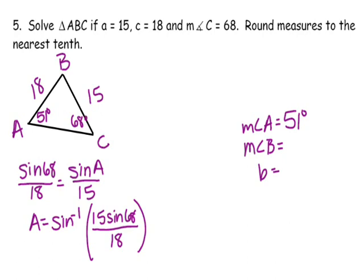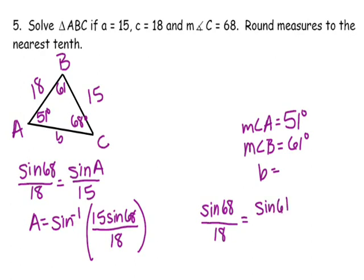Now that angle A is 51 degrees, add 68 and 51, then subtract from 180 to get angle B = 61 degrees. All that remains is finding side b. Set up a new proportion using the original given values — to avoid compounding errors, go back to the given pair: sine of 68 over 18 equals sine of 61 over b. Solve for b — pause now. The answer is b ≈ 17.0.